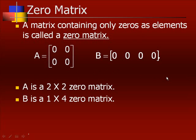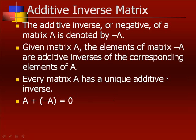A matrix containing only zeros as elements is called a zero matrix. It can be 2 by 2, it could be 1 by 4, but every element in that matrix has to be 0.